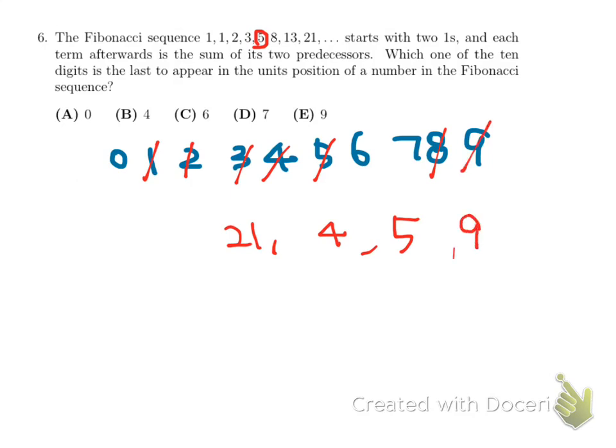Now we're using nine plus five becomes four, which we used it already, but I'm going to write them down here. Nine plus four becomes three. And we used it. Four plus three becomes seven. So, we just used seven. And seven plus three becomes zero. So, the last digit that will be left alone is six, which is choice C.